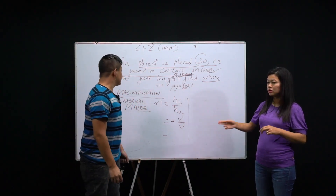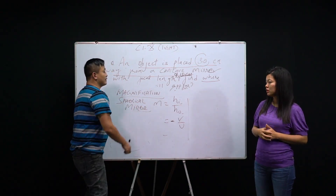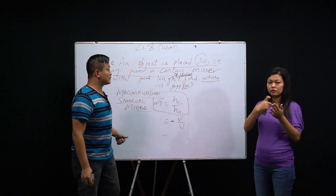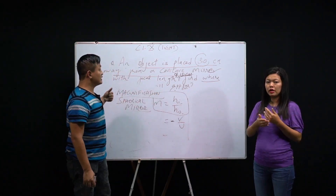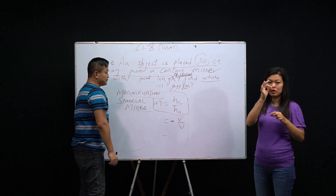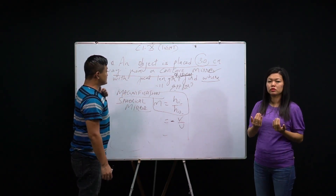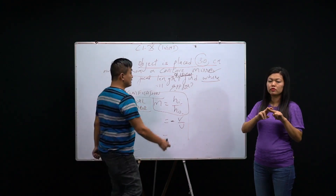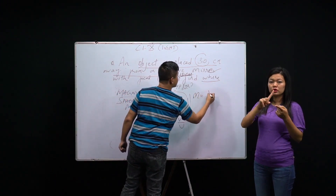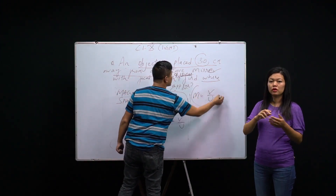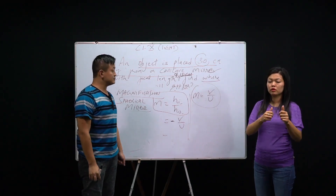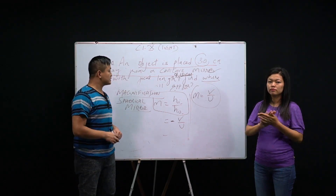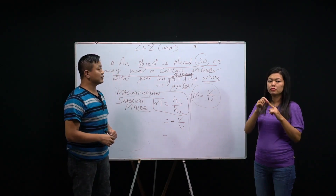Using this formula we can solve any numerical on magnification. For a lens, the magnification formula is similar but without the minus sign: m = v/u. We have now completed the spherical mirror part and will move on to discuss lenses.